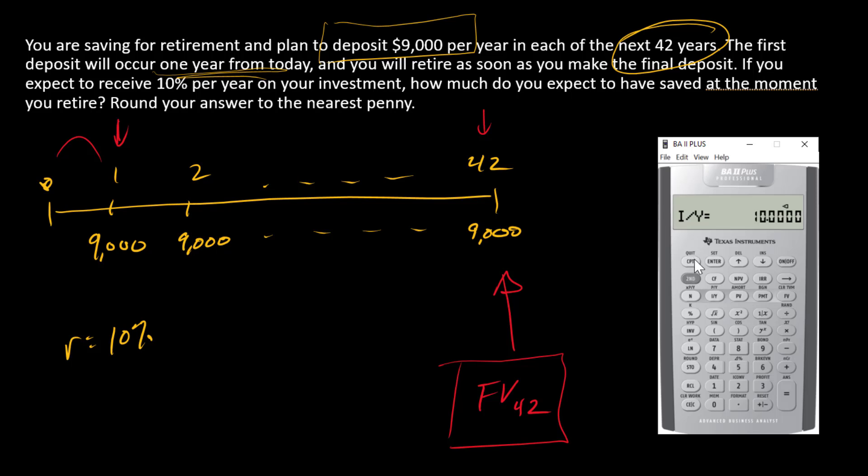Now all I need to do is compute the future value, so compute FV. There is my answer. This is going to show up as a negative sign because of the sign convention in my calculator—my payments are going to be inflows, the future value is an outflow. When you're actually reporting this answer, you want to report it as a positive number: $4,838,732.93.